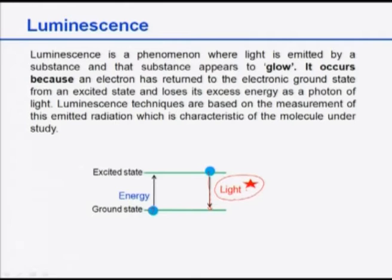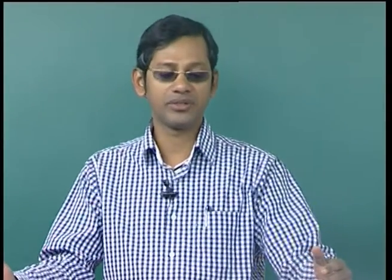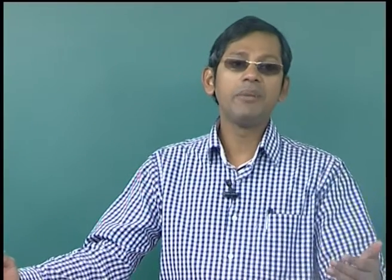Luminescence techniques are based on the measurement of this emitted light, emitted radiations. As discussed in previous lectures on UV-visible spectroscopy and FTIR, this emitted radiation is always characteristic of the molecule because of the specific electronic transitions which take place in such a process.